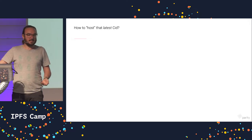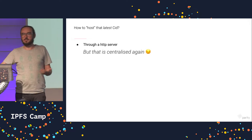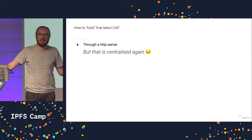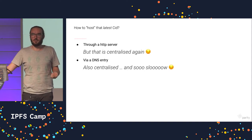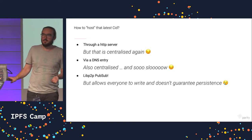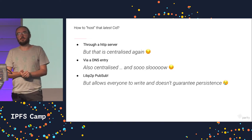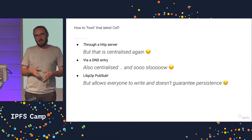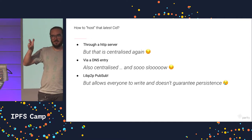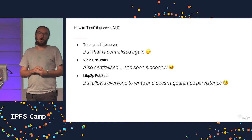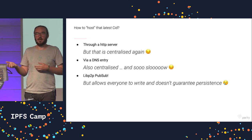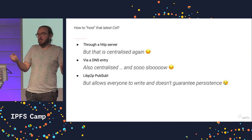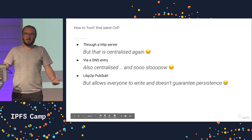So a few solutions exist. You can just do it on HTTP, which is what happens most of the time, but then it's centralized again — so, not great. Dart uses DNS entries, which is centralized and slow, so that's really the worst of all worlds. You could use libpubsub, and that's a decent solution up to a point. However, it doesn't allow any permissioning, so you cannot moderate what is being posted on your blog. Moreover, it doesn't guarantee any persistence whenever all the nodes that subscribe to the topic go down — they come back up and they don't remember. That's annoying for the comments on your blog.